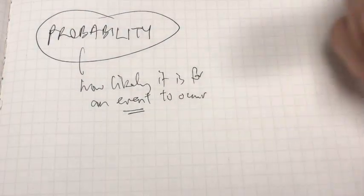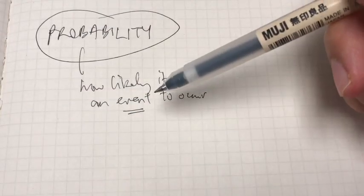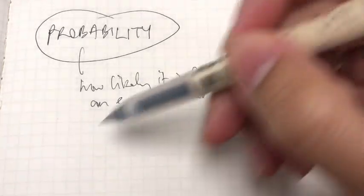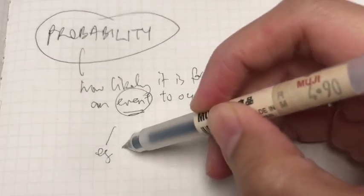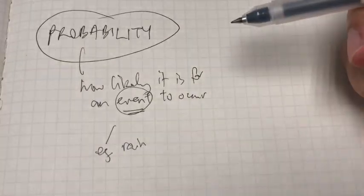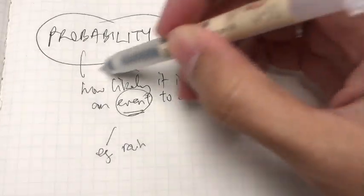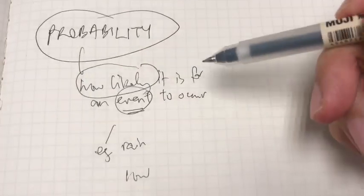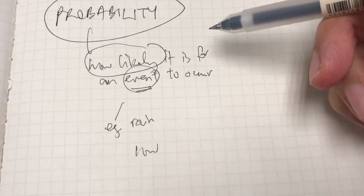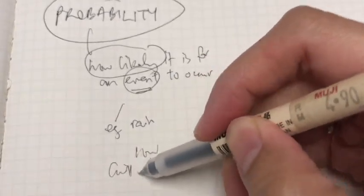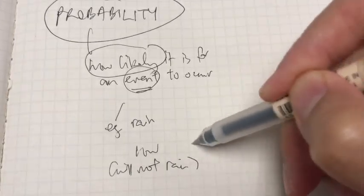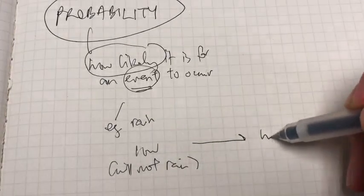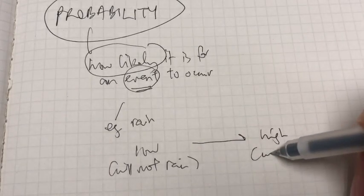When we talk about an event, an event could be anything. It could be an event whereby the day will be raining or not. Say the event here is whether it will rain or not for the day. And how likely is it to rain? This likelihood can range between being very low likelihood, meaning it will not rain, and it may stretch up to very high likelihood, meaning it will rain.